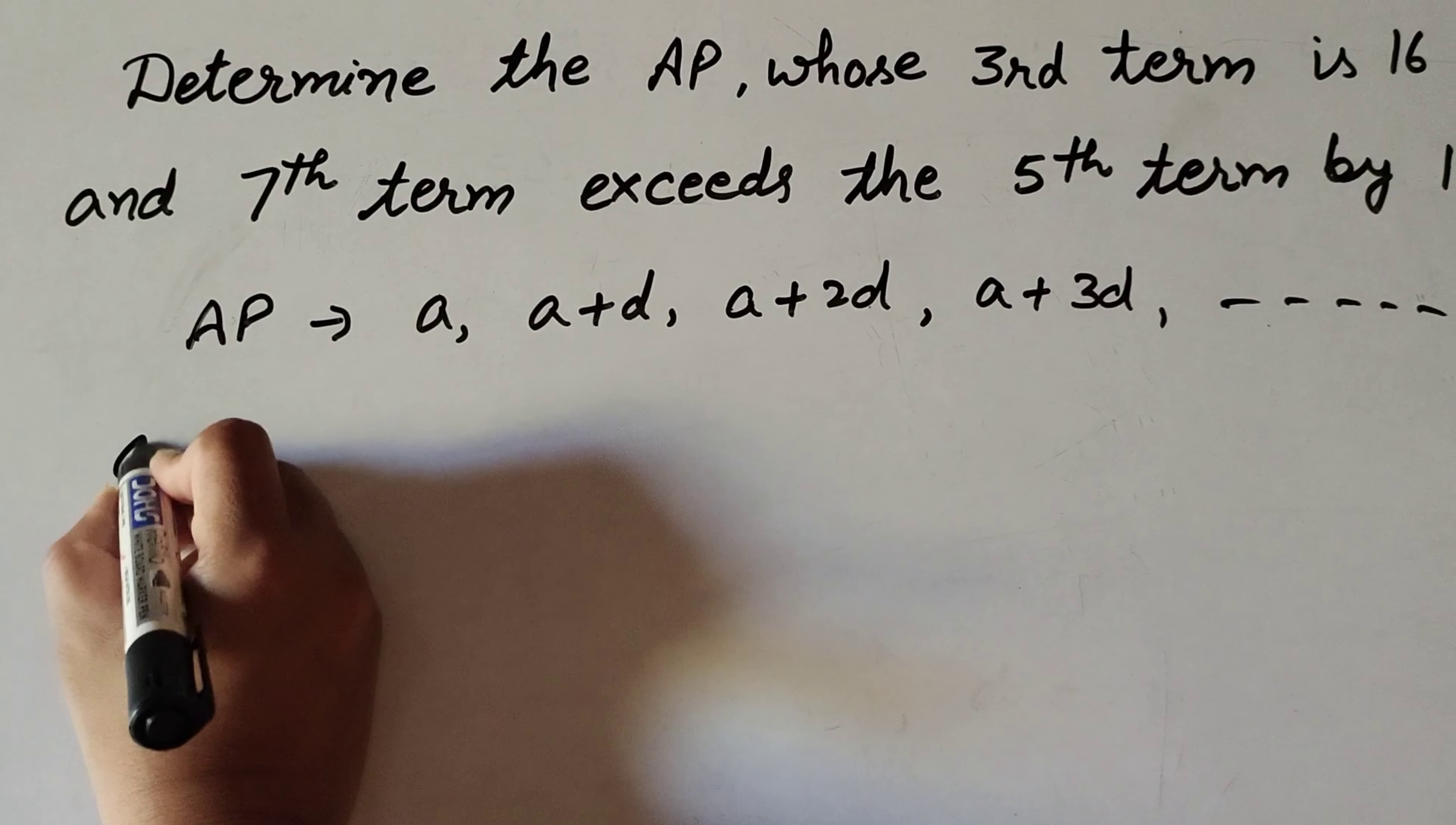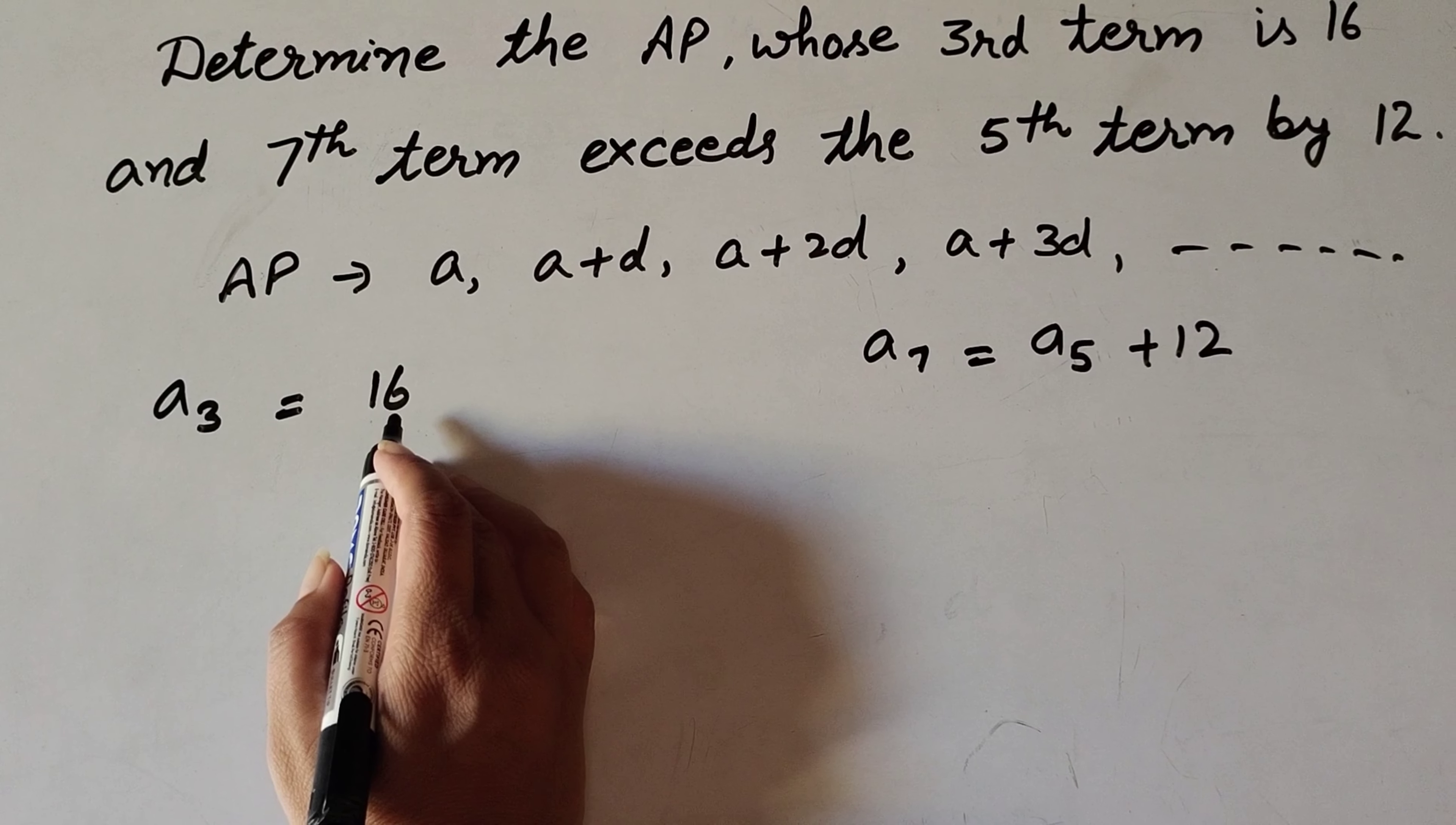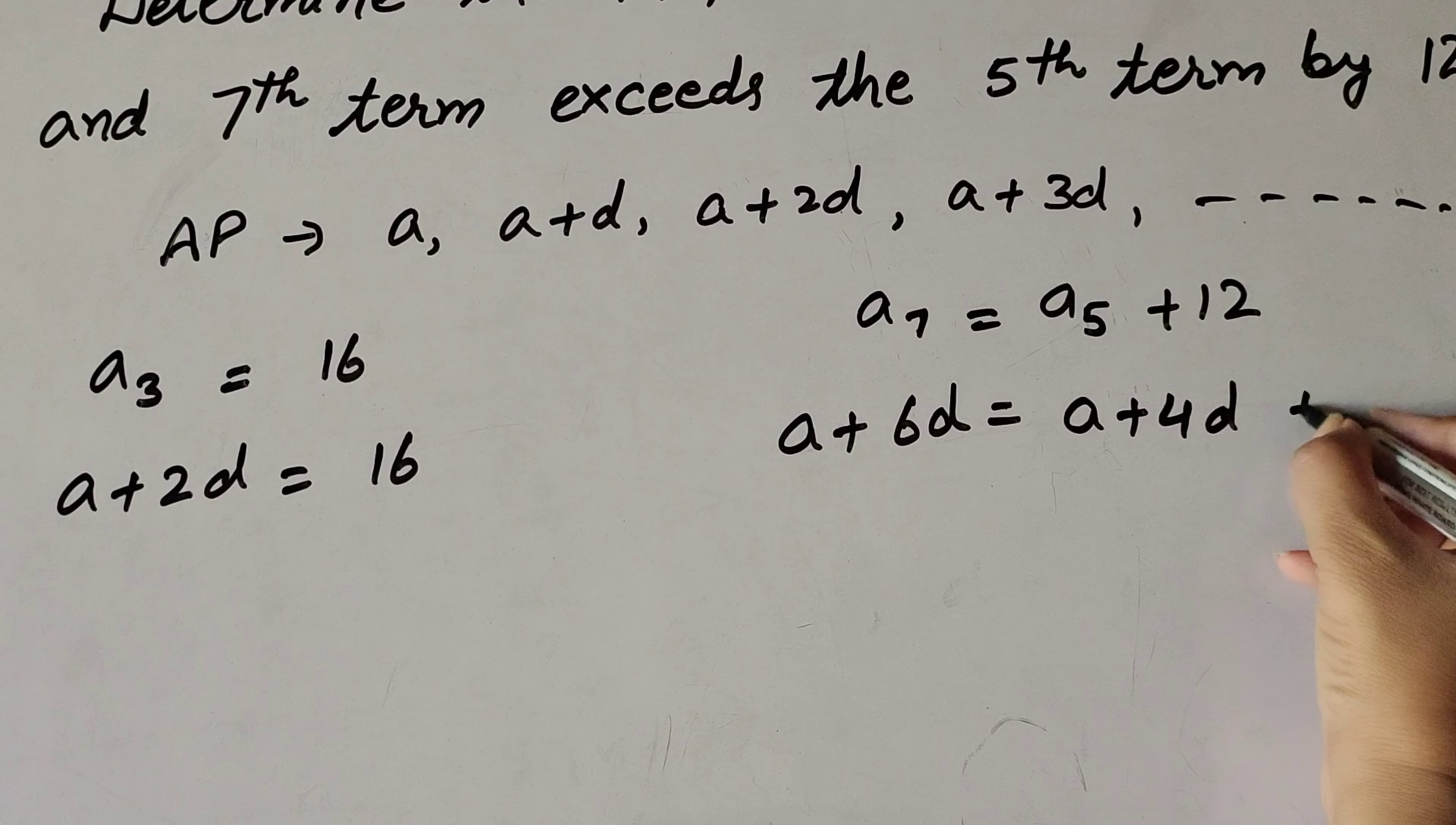So the given information is: 3rd term of the AP series equals 16, and 7th term exceeds 5th term by 12, so a7 equals a5 plus 12. Therefore a3 equals 16, which means a plus 2d equals 16. And a7 is a plus 6d, which equals a5, or a plus 4d, plus 12.